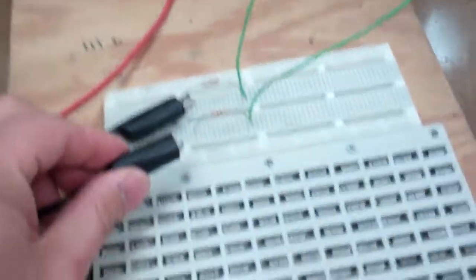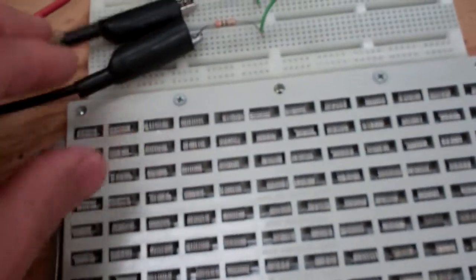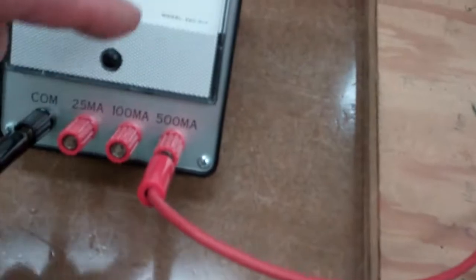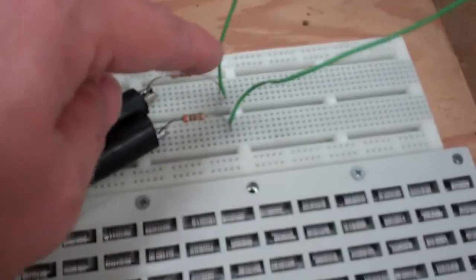I'm now going to take the more negative power, right here, from the power supply itself and go to the other side. So now I have a full, complete circuit. Red goes down, around, into the ammeter, from the ammeter through the common, all the way back through here to the more negative power supply.